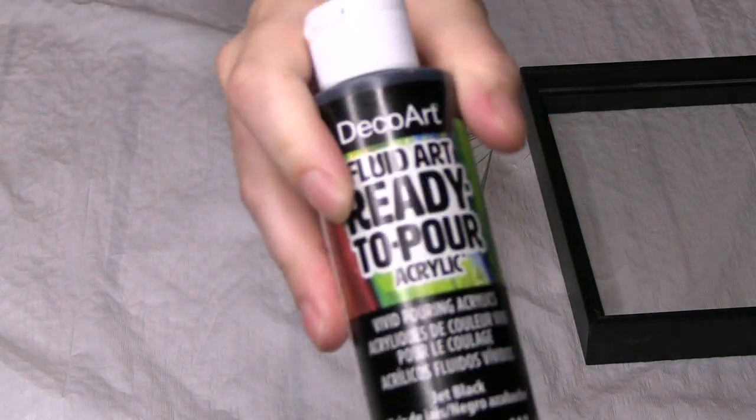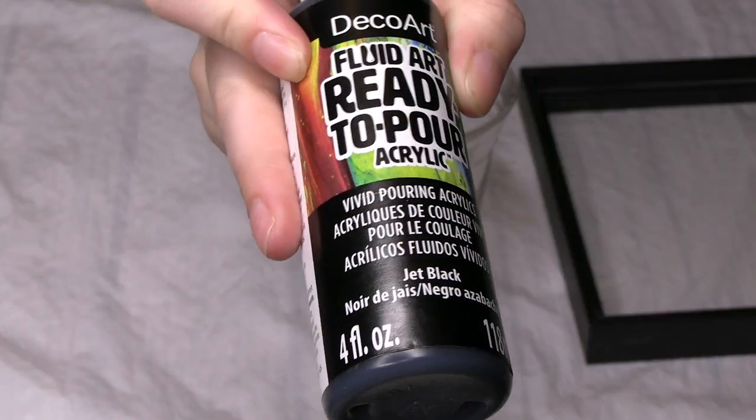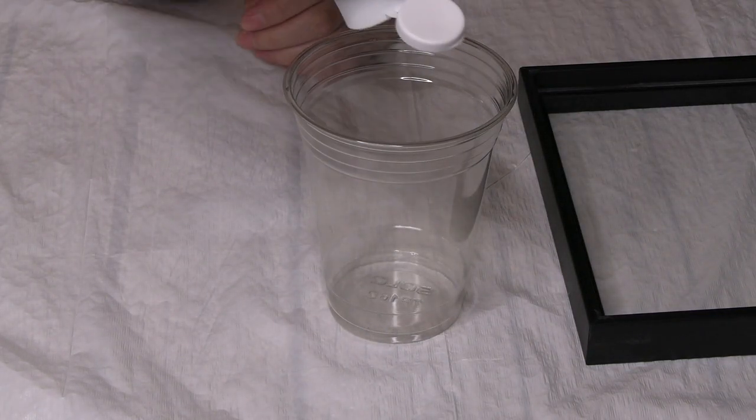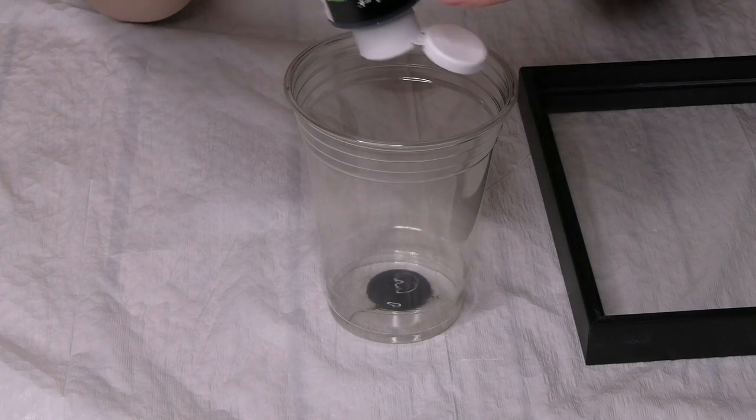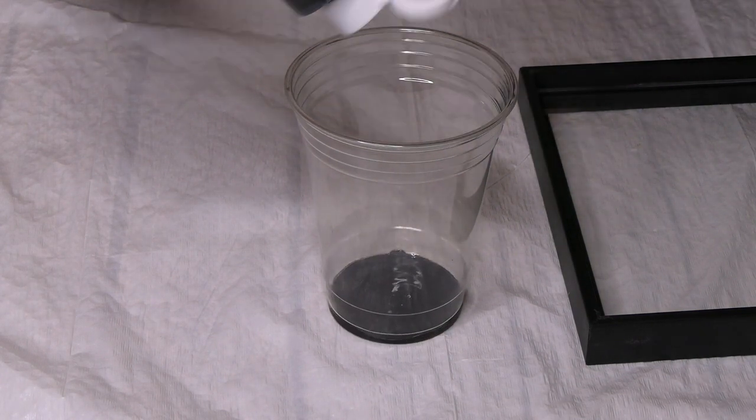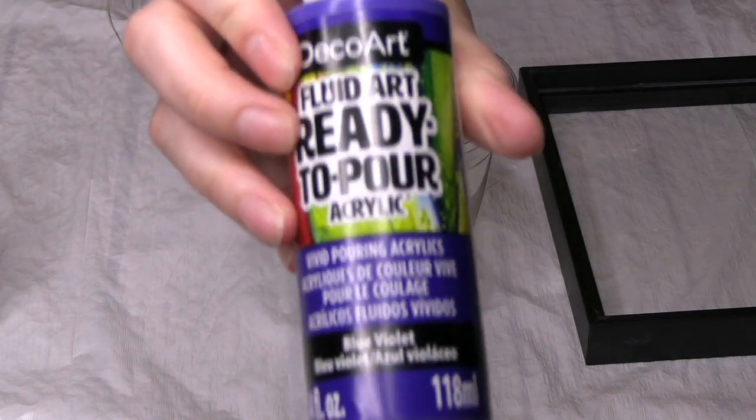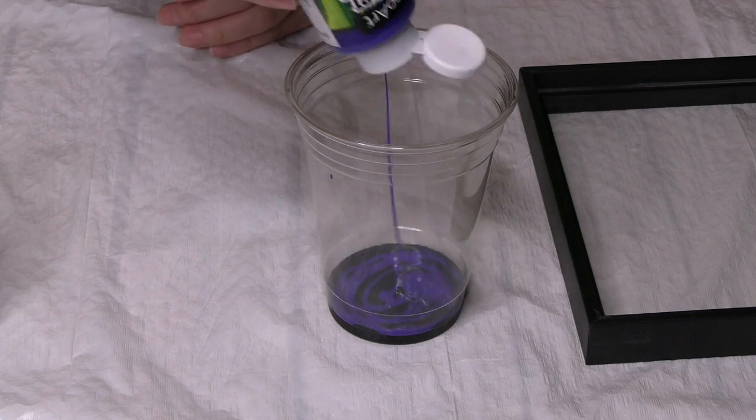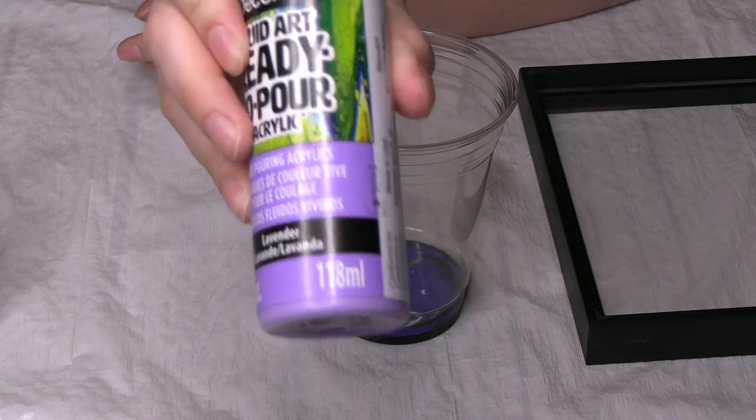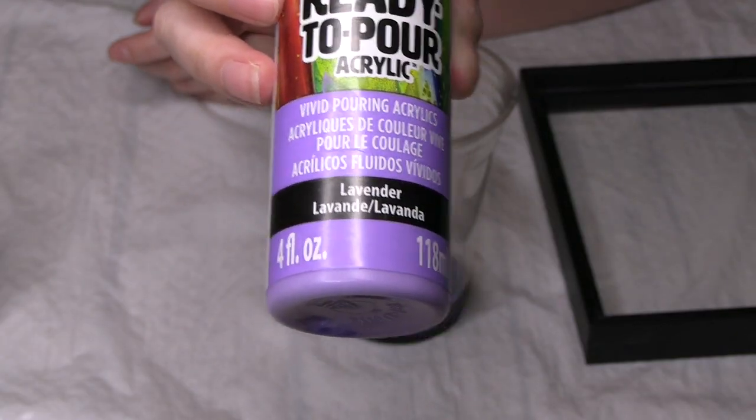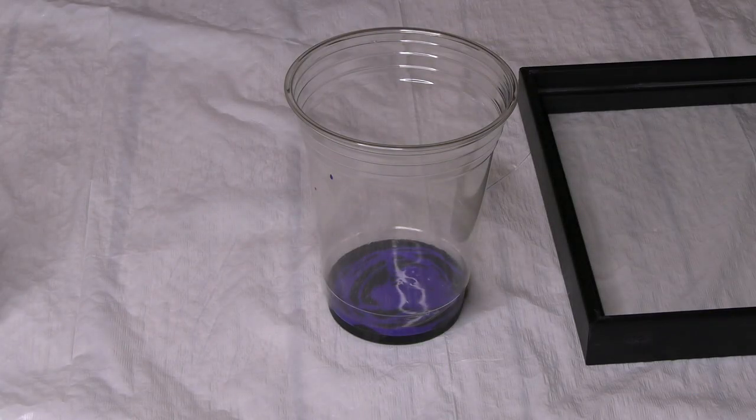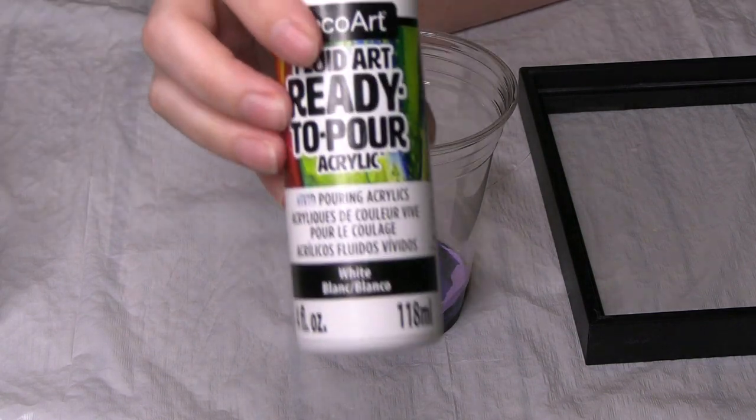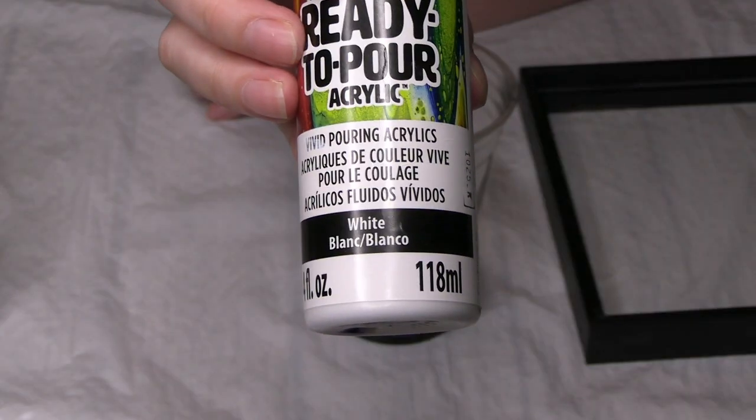So now it's time for the paint pouring. For the first color, I am using jet black. And in the last paint pouring video, you guys gave me a lot of tips and tricks, so it should be better this time. Then for the second color, I used blue violet. My third color was lavender. And if you couldn't figure it out, yes, I'm doing the galaxy colors for this one because these colors are so cool. And then for the last color, I am using white.